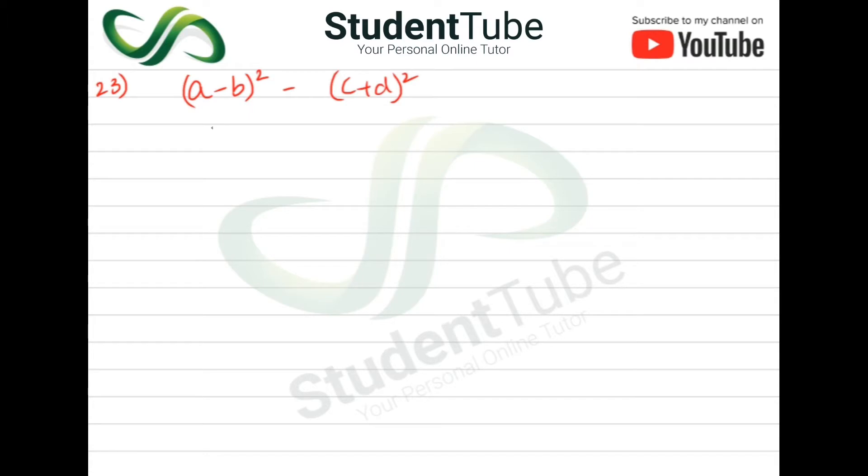(a-b)² - (c+d)². First we will remove this. Now we have to apply formula.